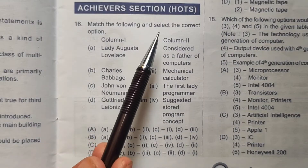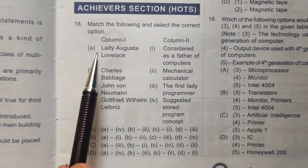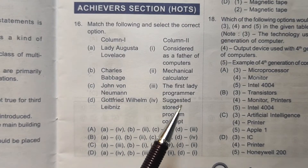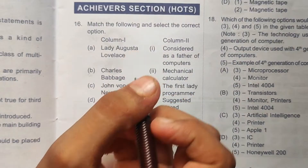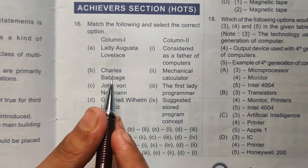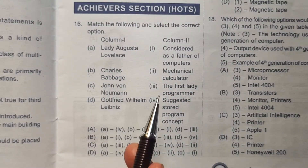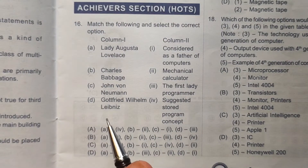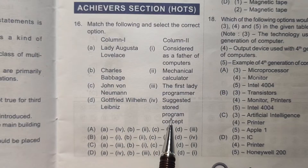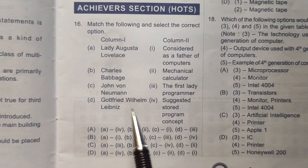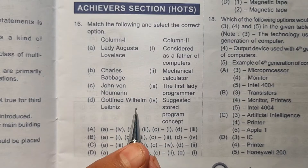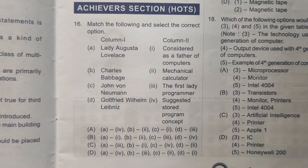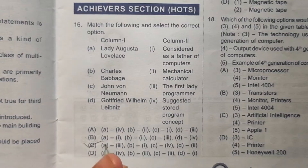Achiever section, question 16: match the following and select the correct option. Lady Augusta Lovelace was the first lady programmer. Charles Babbage was the father of computers. John von Neumann suggested the stored program concept. Gottfried Wilhelm Leibniz built a mechanical calculator. The correct answer is option number C.